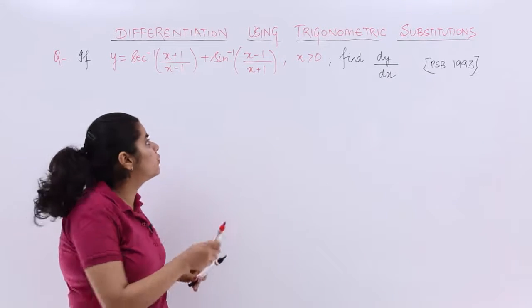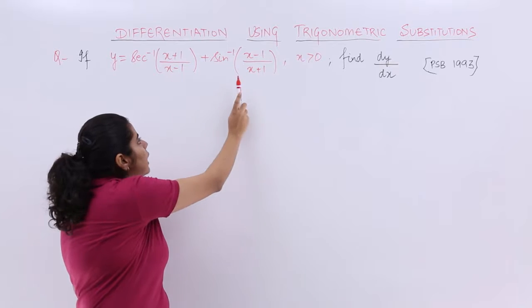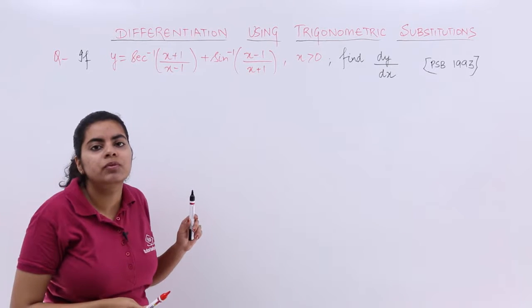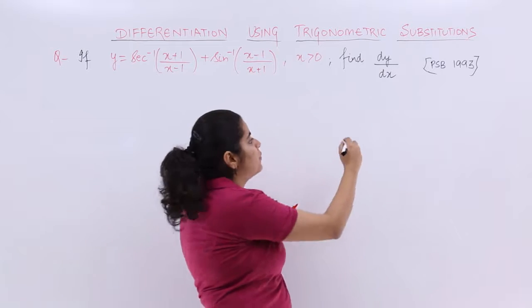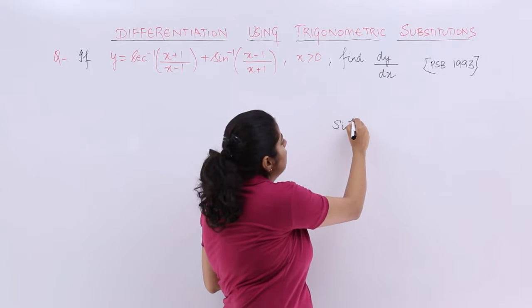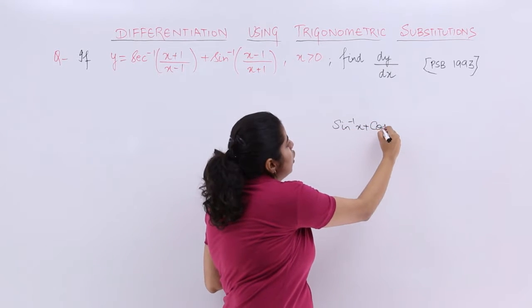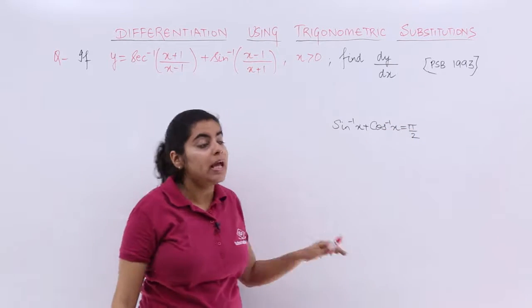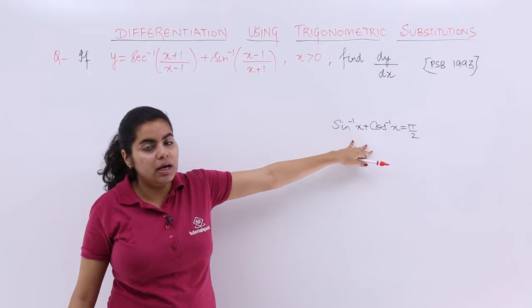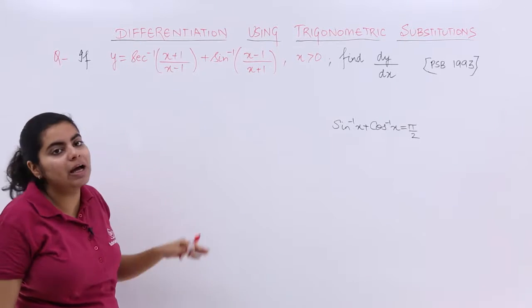What if at all these inside brackets become equal and one you have is sin inverse, somewhere we have in our mind this formula sin inverse x plus cos inverse x is equal to pi/2. In order to apply this formula, we have to see how we can apply in this question.